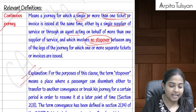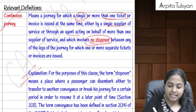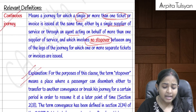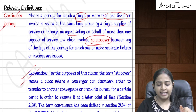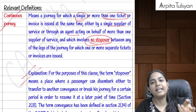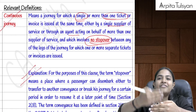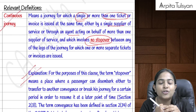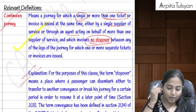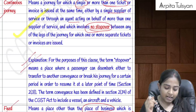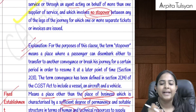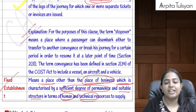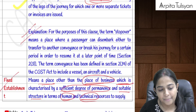A continuous journey is one for which there may be a single ticket or multiple tickets issued, but crucially there should be no stopover — no break — in between. Such a journey is called a continuous journey.